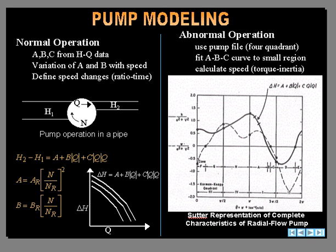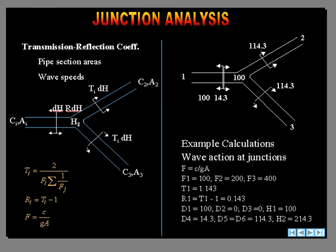For junctions, if a pressure wave approaches a junction, you'll get a transmitted wave into the junction and a reflected wave back. These are quite simple to calculate. Here's an example. If we had a 100-foot wave approaching this junction with these characteristics, this is the wave speed over GA, we would get a wave of 114, actually a magnification of the wave being transmitted down and a reflected wave of 14 going back.